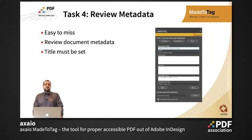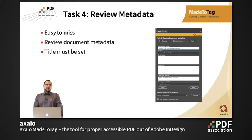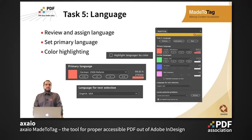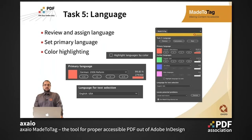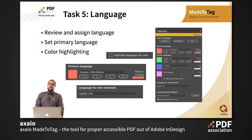The fourth task is a short one — reviewing document metadata. This is often missed in InDesign. Even though it's just a copy of the InDesign dialogue, since it's an essential part of PDF UA we included it here so you don't need to go into another dialogue. The fifth task is the language review — you can not only review but also assign a new language with color highlighting. You can set a primary language for the document so you don't have to choose it during export, since you should define that during the creation process.